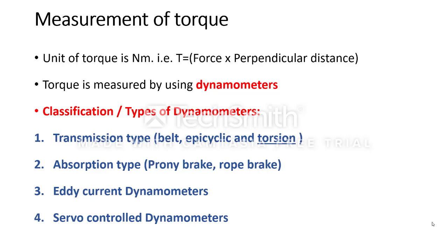It can measure the friction power by knowing the frictional resistance. If you know any kind of frictional resistance, we can measure the friction power. If we determine the torque transmitted, we can determine the power of the engine. Torque is a crucial part of generating power from the engine.